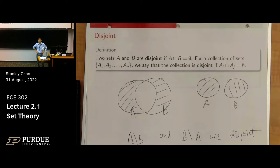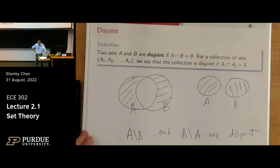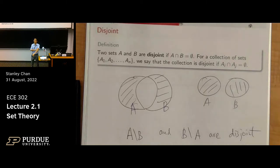Good morning. Thanks for your patience — we are figuring out the recording system. On Monday we started to talk about set theory and we were done with the infinite intersection and infinite unions. Everyone is taking some time to review all these materials, and towards the end of the Monday lecture we started to talk about this concept of disjoint, where you have two sets and they do not overlap.